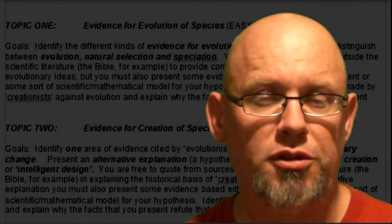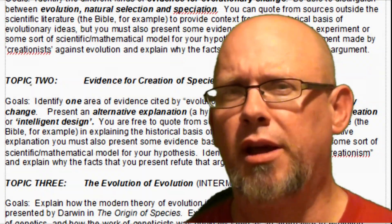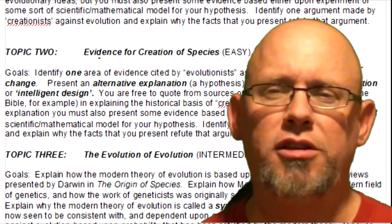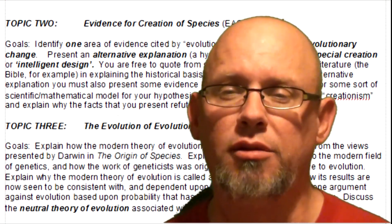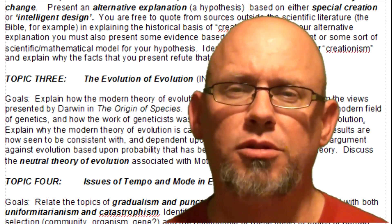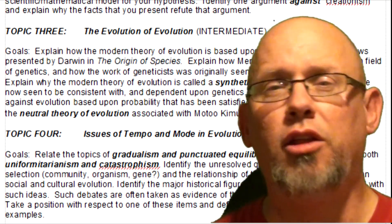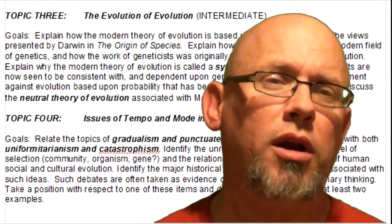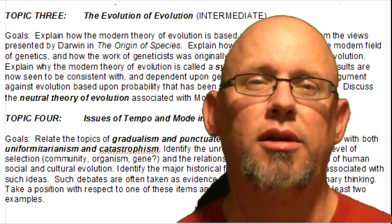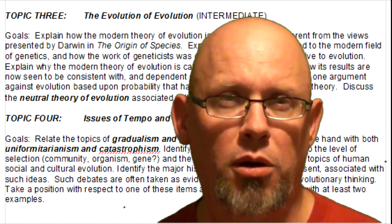There are four topics, and again it is the student's choice. Two of them are relatively easy: one is called evidence for evolution of species, and the other is called evidence for creation of species. In each case, you'll be expected to identify some of the evidence for common descent, distinguish between evolution, natural selection, and speciation, and provide arguments both for and against a particular position to show that you understand the opposing points of view.